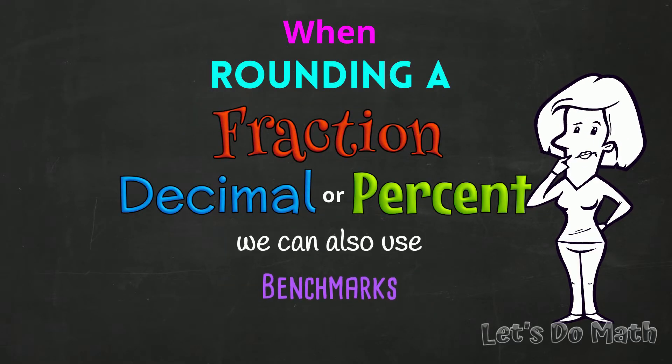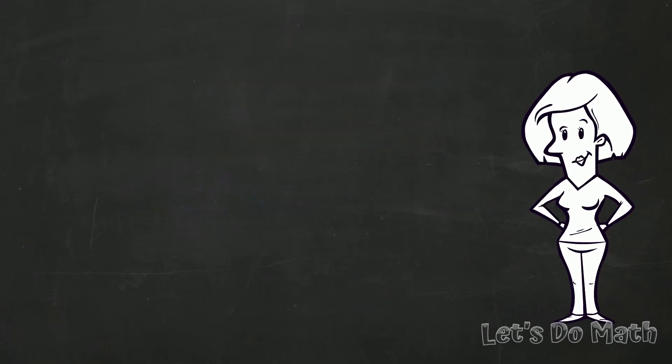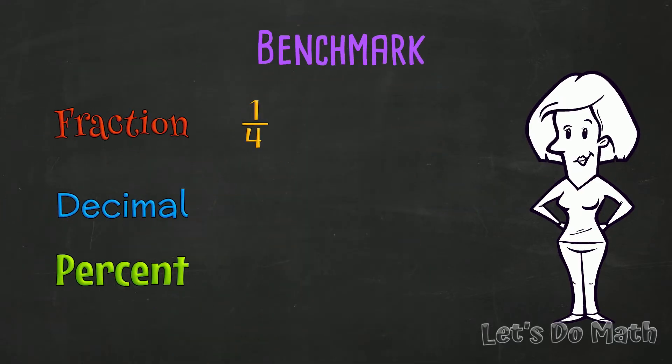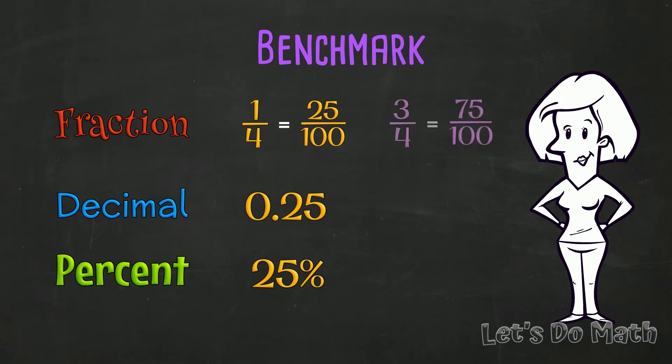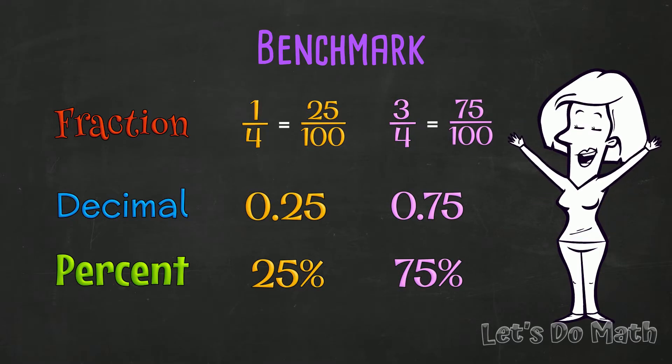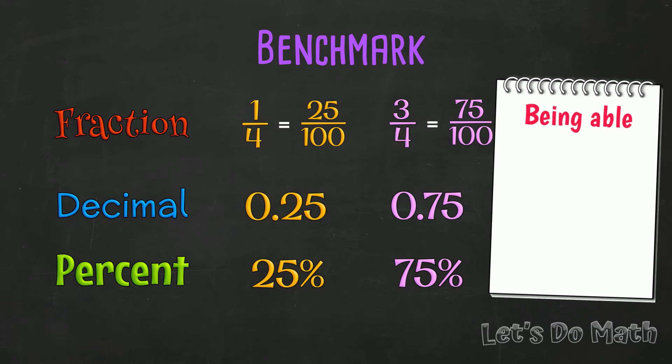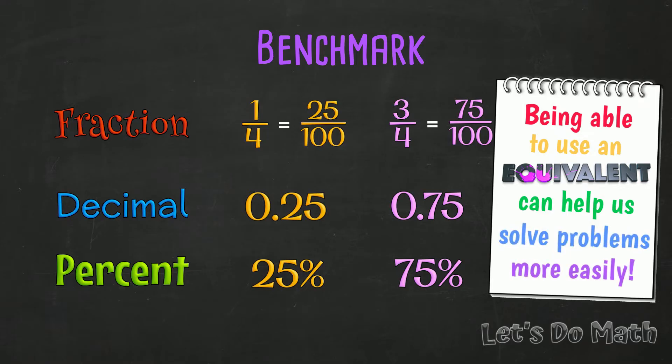1 quarter is 25 over 100, 0.25 or 25%. And 3 quarters is 0.75 or 75%. Being able to use an equivalent can help us solve problems more easily.